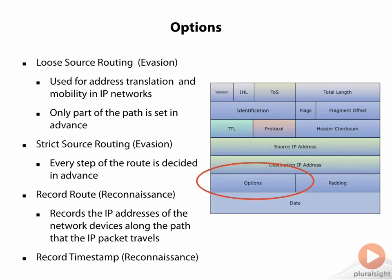There's also the record timestamp option, which is also used for recon attacks. When a device receives a packet in the transit path, this option creates a list of addresses of each of those devices and the duration of transmission between each one of them.